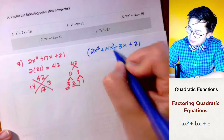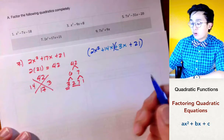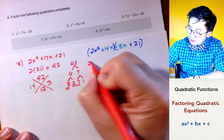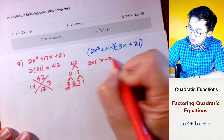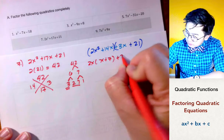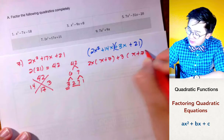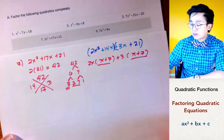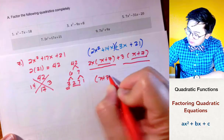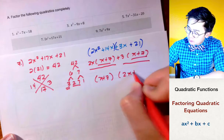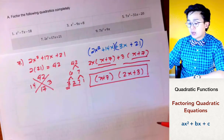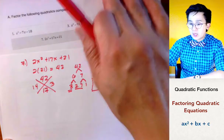Now I have two groups to factor using the GCF. The GCF of the first group is 2x, leaving (x + 7) inside. The GCF of the second group is positive 3, also leaving (x + 7) inside. Since (x + 7) is the greatest common factor between the two terms, I take it out and am left with (2x + 3). The factored form of 2x squared plus 17x plus 21 is (x + 7)(2x + 3).